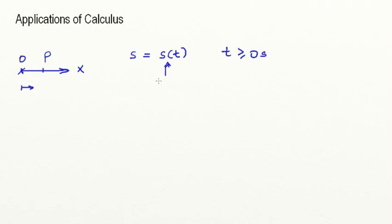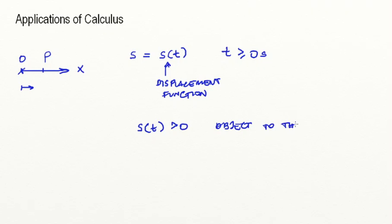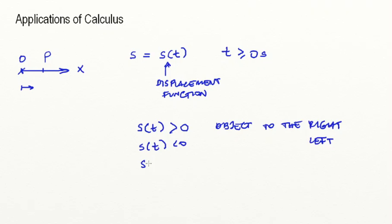We can call this a displacement function. Now, if my displacement at any time is larger than zero, then my object is to the right. So if x is greater than zero, then my object is going to be to the right. Obviously, if instead it's less than zero, then it's to the left. So if my position is negative, then my object is to the left of my origin. And if at any time it's zero, then the object is at the origin.